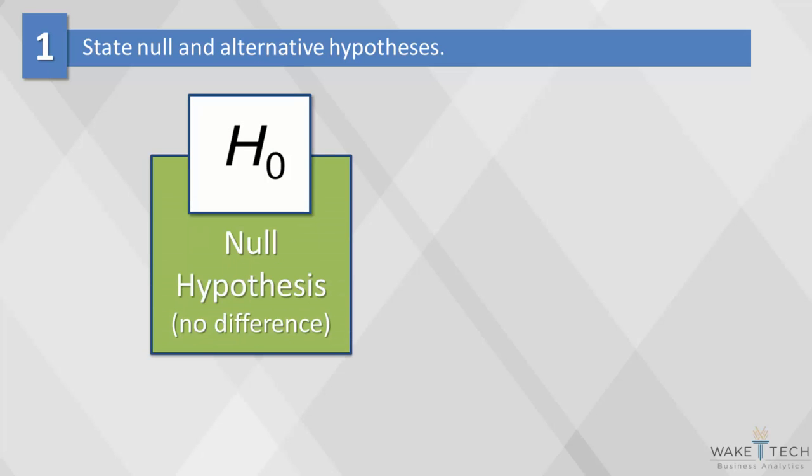The null hypothesis, abbreviated H0, is a statement of no difference. In other words, the null hypothesis argues that there is no significant difference between our specified populations and that any observed difference is due to sampling or experimental error.